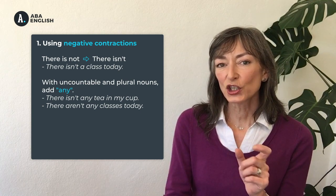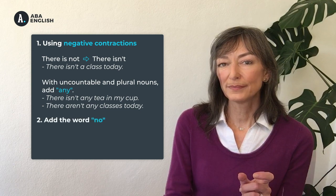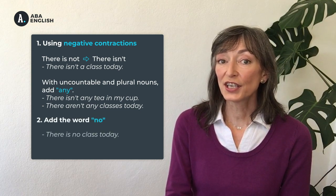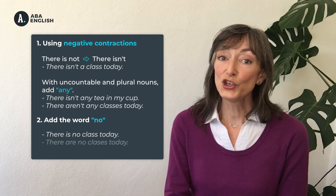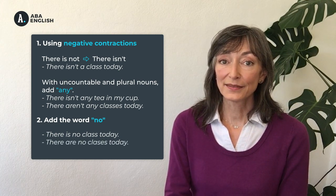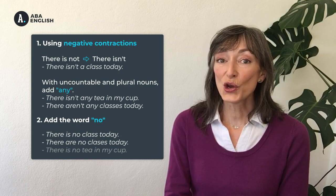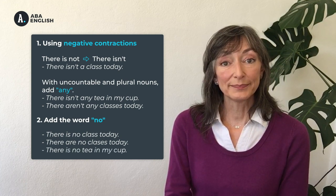The second way we can make negative sentences is very easy — we just add the word no. There is no class today. There are no classes today. That's easy, right? There is no tea in my cup.